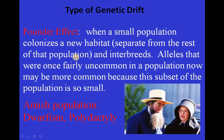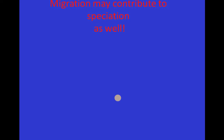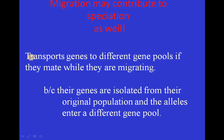There is a founder effect seen in genetic drift: when a small population colonizes a new habitat separate from the rest of the population and interbreeds, alleles that were once fairly uncommon may become more common because this subset is very small. The example is the Amish population, where dwarfism and polydactyly are quite common due to the founder effect. Migration may also contribute to speciation by transporting genes to a different gene pool, isolating alleles from the original population.